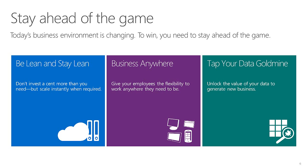The first pillar is Be Lean and Stay Lean, which focuses on how to make maximum use of your technology investments — virtualization, server consolidation, modernizing your storage infrastructure using things like Storage Spaces. The second pillar is Business Anywhere, really talking about giving employees the flexibility to work remotely with the devices they have and want to use. The third pillar is Tap Your Data Goldmine — businesses have a lot of information about how they've been doing and about customer behavior that, if analyzed well, would truly help them grow their business and be more successful.